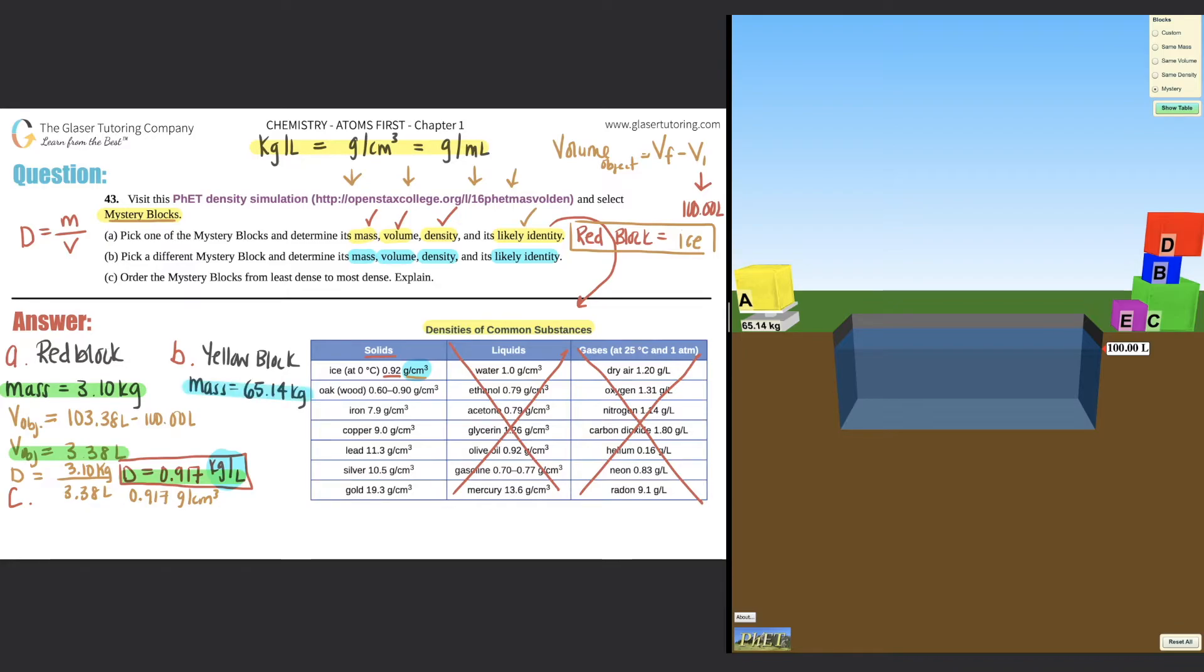Now we got to find the volume. So the volume of the object would be by displacement equal to final minus initial. So remember for this, the initial is always 100. So 100.00 liters. Let's just find out what the final is. Let's slam this in. Boom. And there you go. 103.38. So it's the same volume as the other object. 3.38 liters.